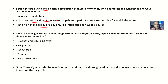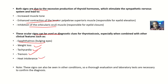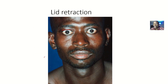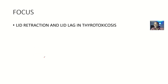These ocular signs can be used as a diagnostic clue for thyroid toxicosis, especially when combined with other clinical features such as exophthalmos, weight loss, tachycardia, tremors, and heat intolerance. If a patient presents with lid lag or lid retraction alongside these features, you can conclude the patient has thyroid toxicosis. That covers the differences between lid retraction and lid lag in thyroid toxicosis.